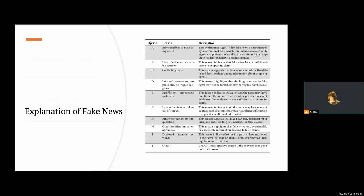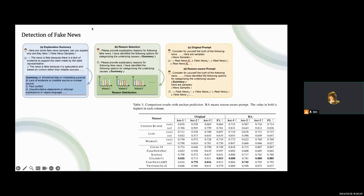Then we come to the explanation of fake news. In this section, we define many reasons to explain fake news. For example, one reason is emotional bias or misleading intent, suggesting that the fake news is characterized by emotional bias. Another reason is conflicting facts, which suggests that the fake news conflicts with established facts, such as wrong information about people or events.